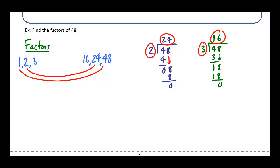All right, keep moving on. I'm going to try four. Four goes into four one time with no remainder, bring down the eight and four goes into eight two times with no remainder. So four is also a factor. And so is 12.